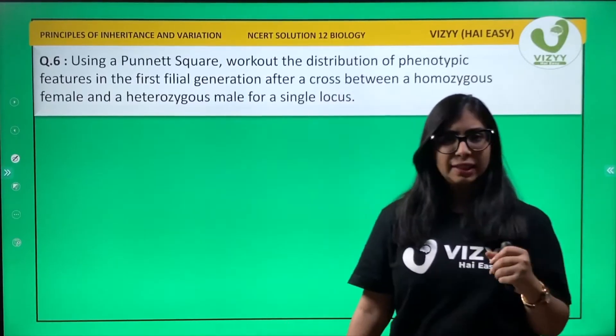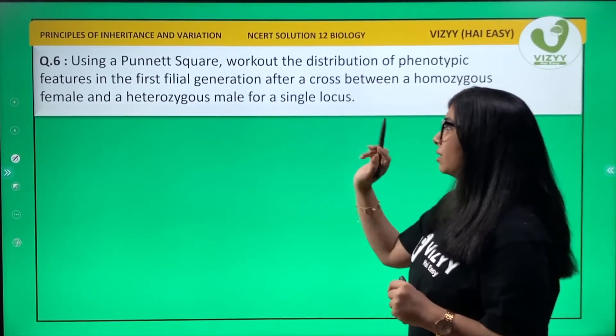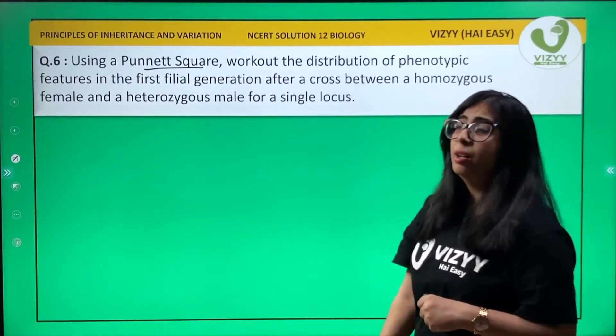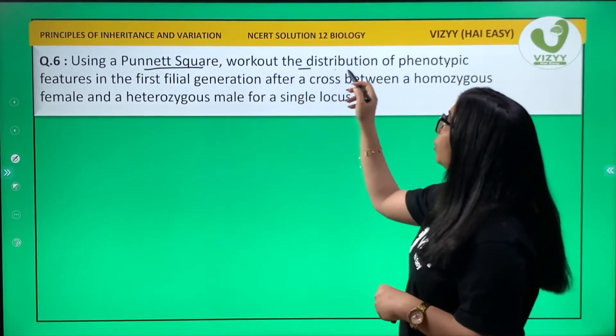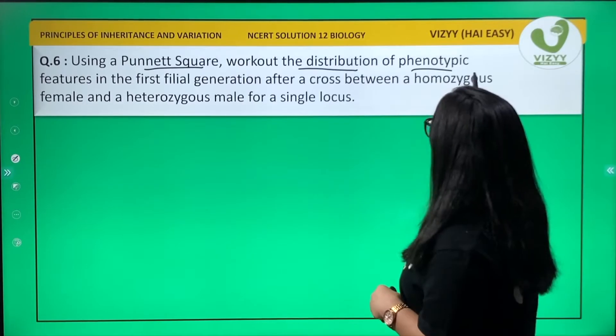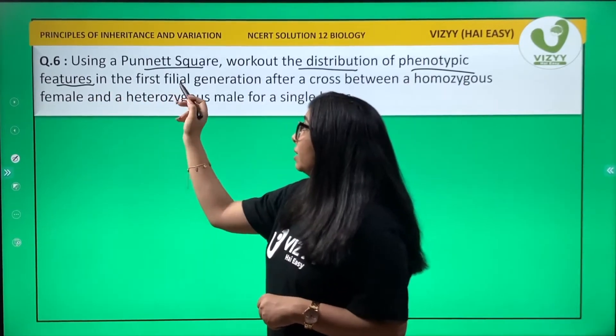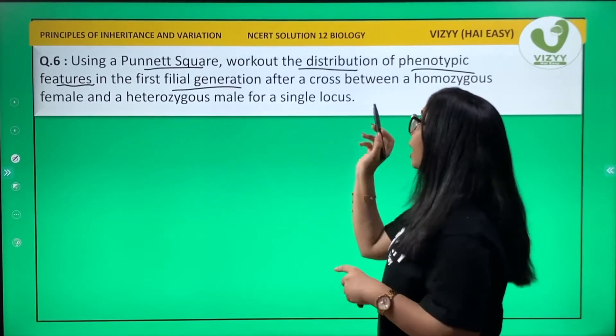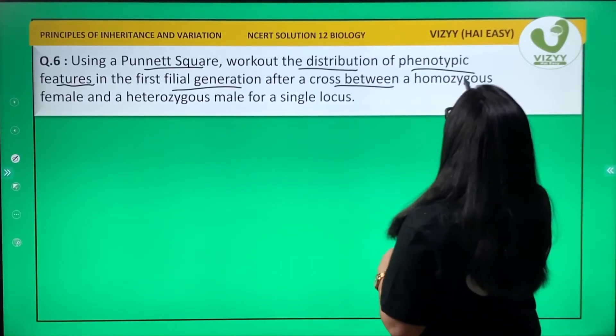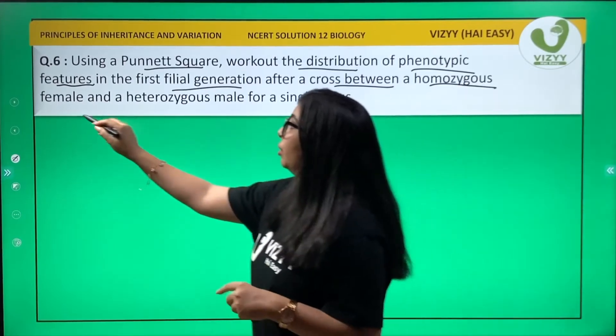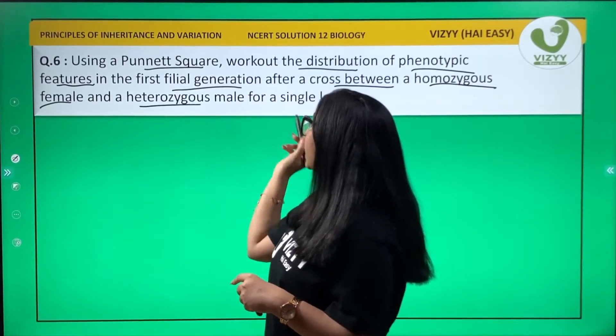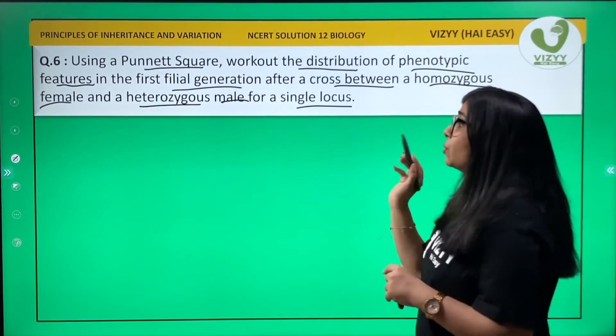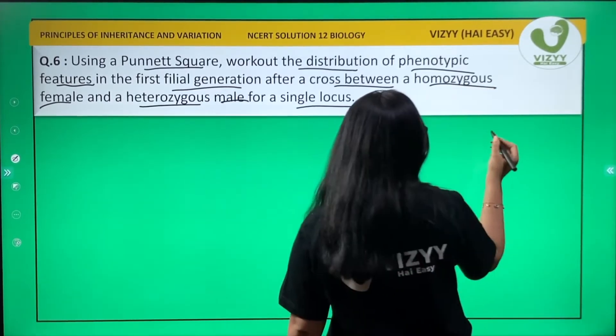Question 6 says: using a Punnett square, work out the distribution of phenotypic features in the first filial generation after the cross between a homozygous female and a heterozygous male for a single locus. The female could be homozygous tall or homozygous dwarf.